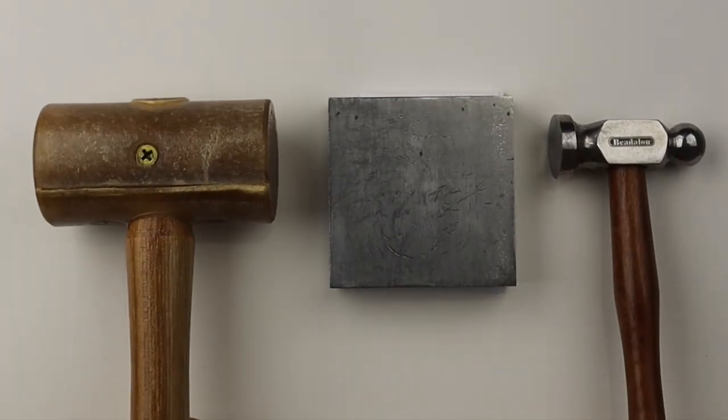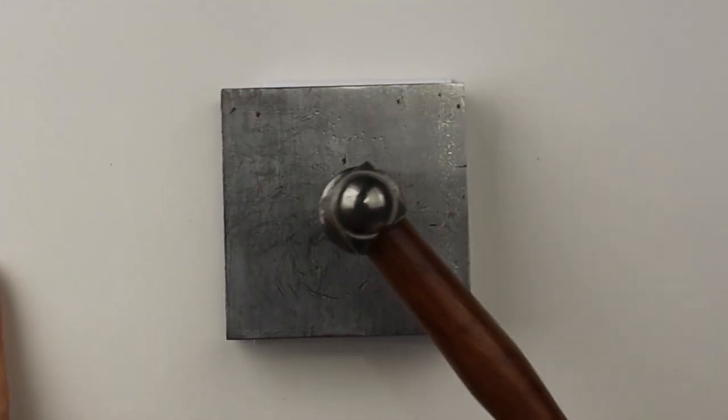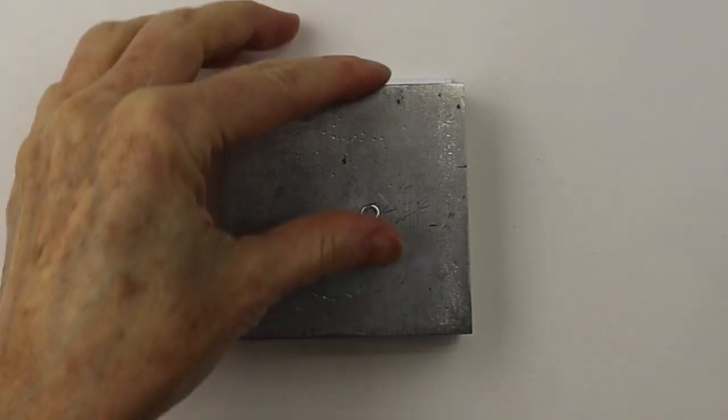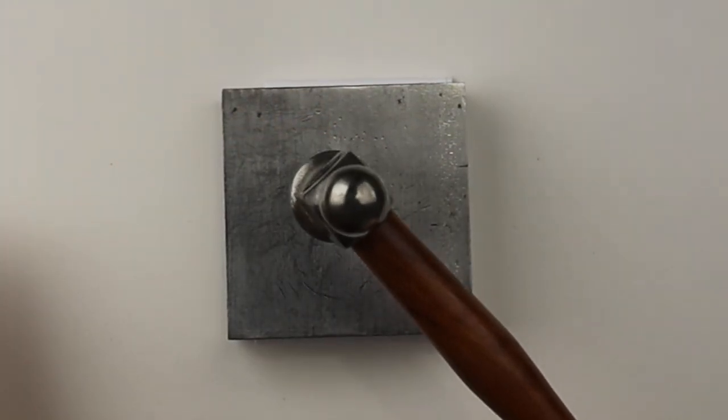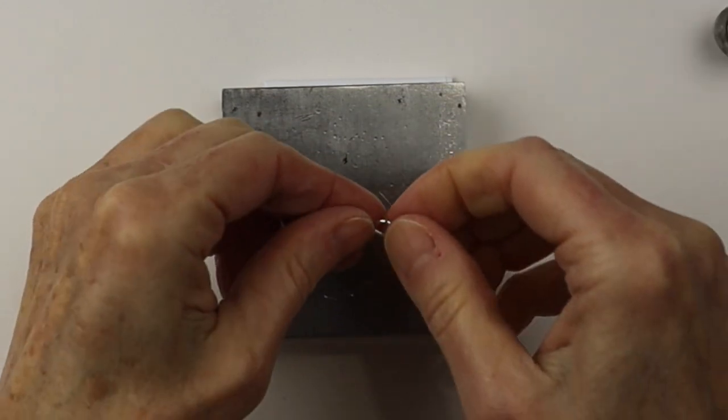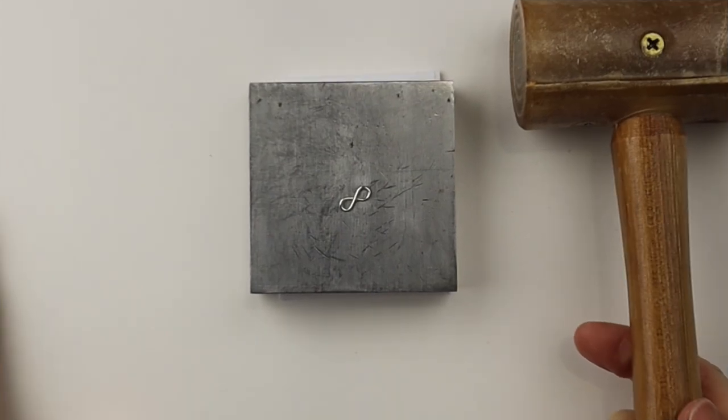So now we are going to start with the chasing hammer and I also have a rawhide hammer. This is the Beadalon chasing hammer and we're just going to give it a few taps to harden it up a little bit and also it can flatten it a little bit if you want it more flat.